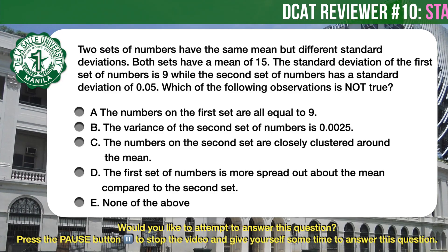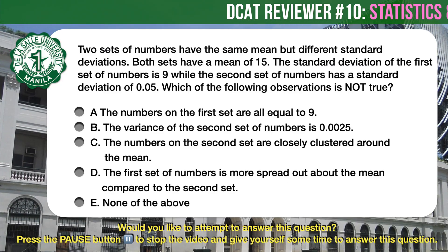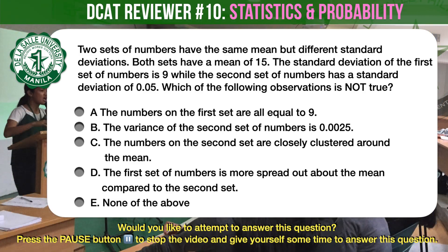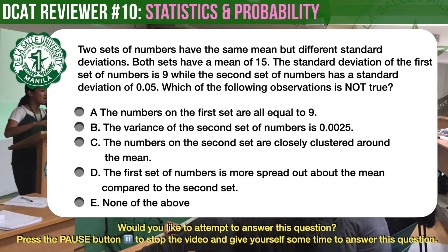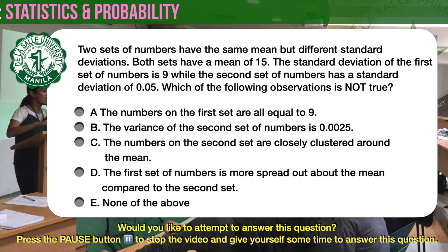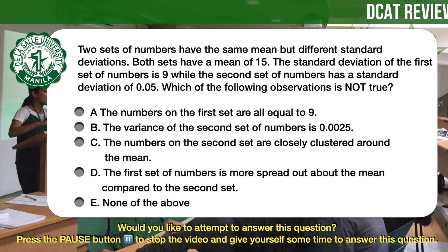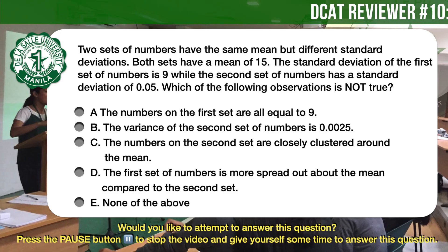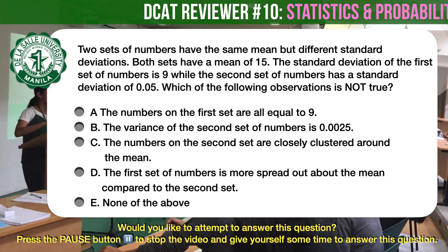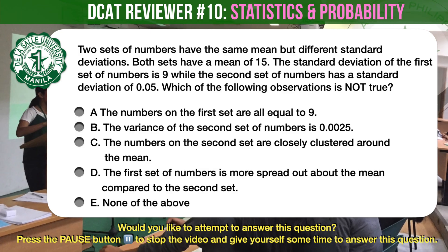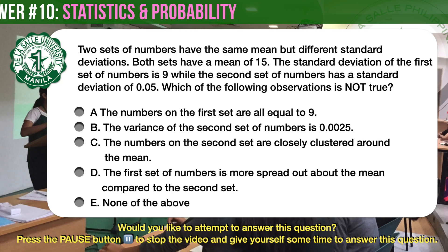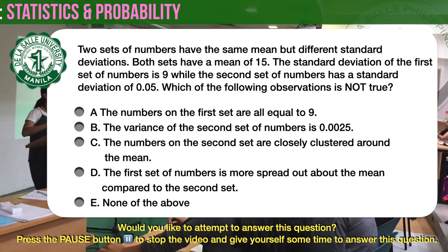Question number 1. Two sets of numbers have the same mean but different standard deviations. Both sets have a mean of 15. The standard deviation of the first set is 9, while the second set has a standard deviation of 0.05. Which of the following observations is not true? A: The numbers on the first set are all equal to 9. B: The variance of the second set is 0.0025. C: The numbers on the second set are closely clustered around the mean. D: The first set is more spread out about the mean compared to the second set. E: None of the above.